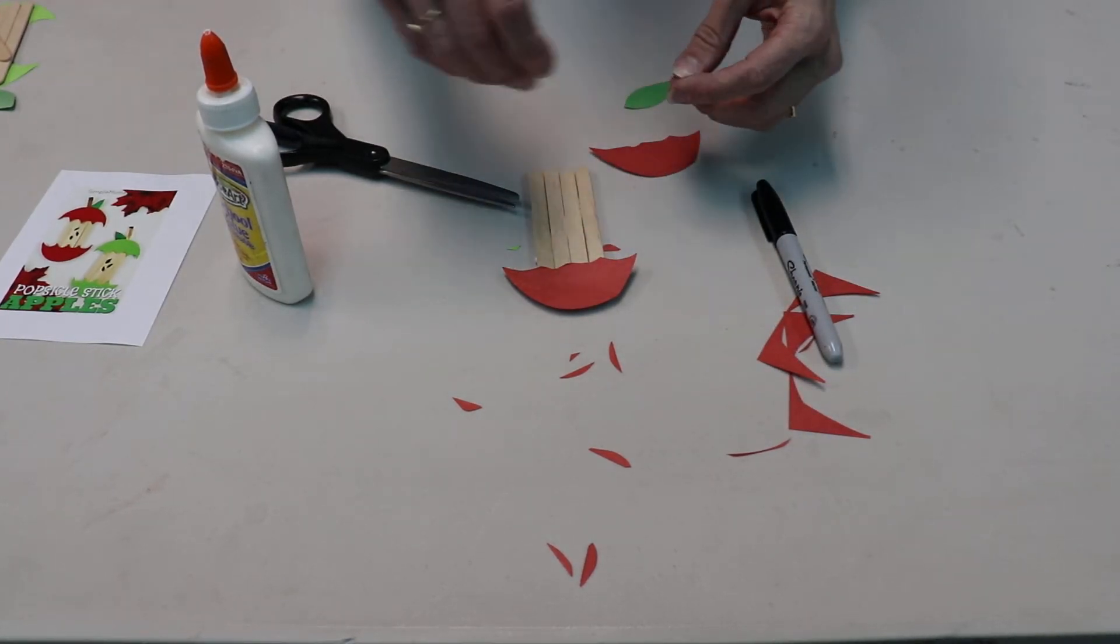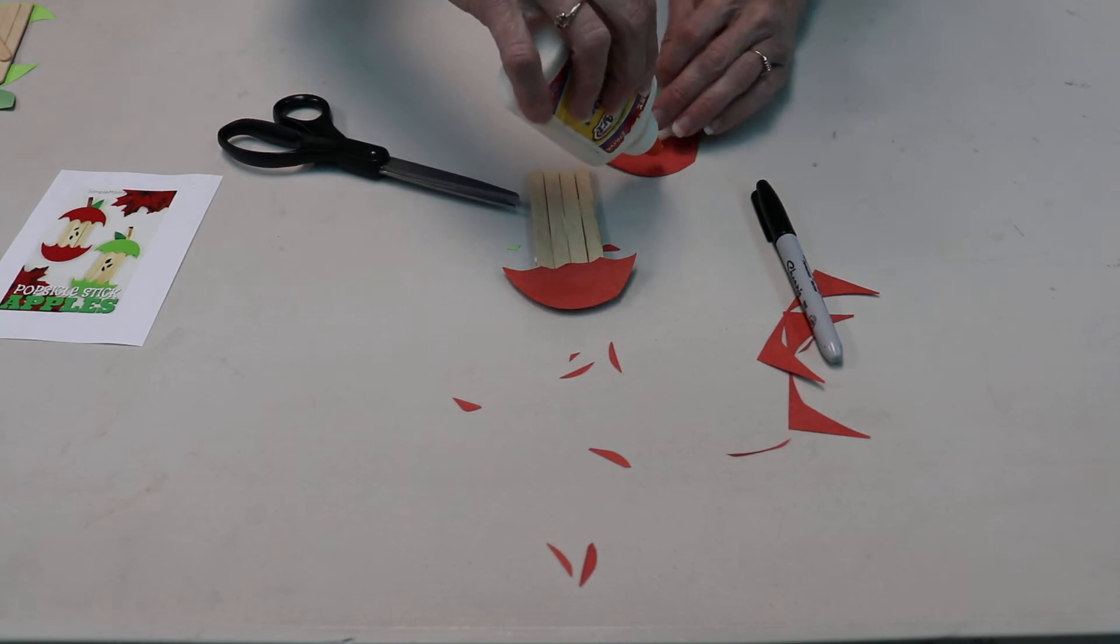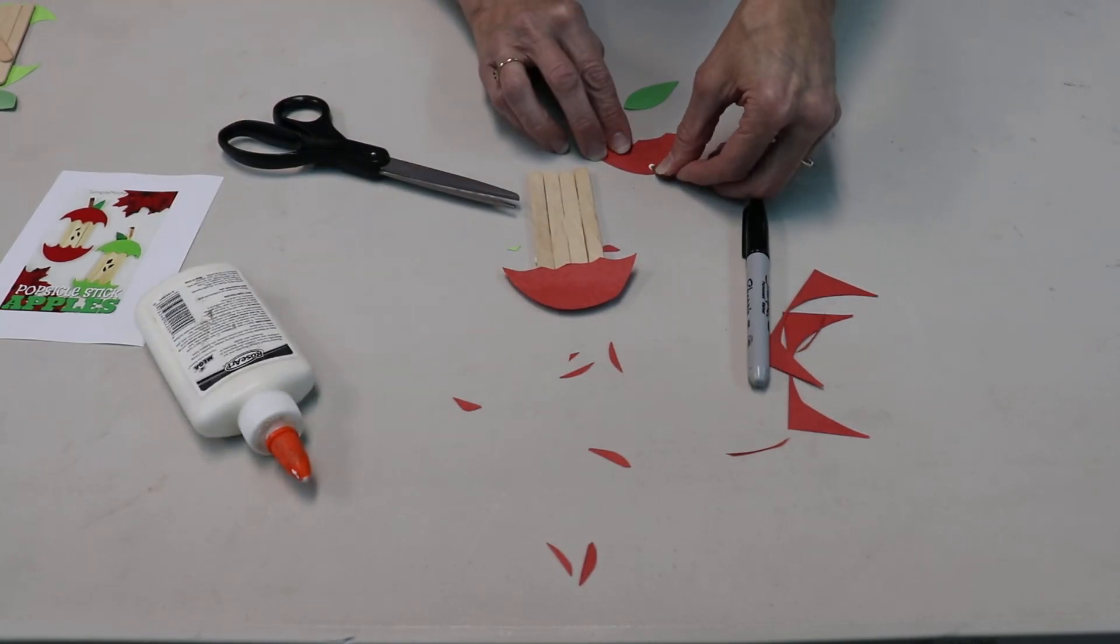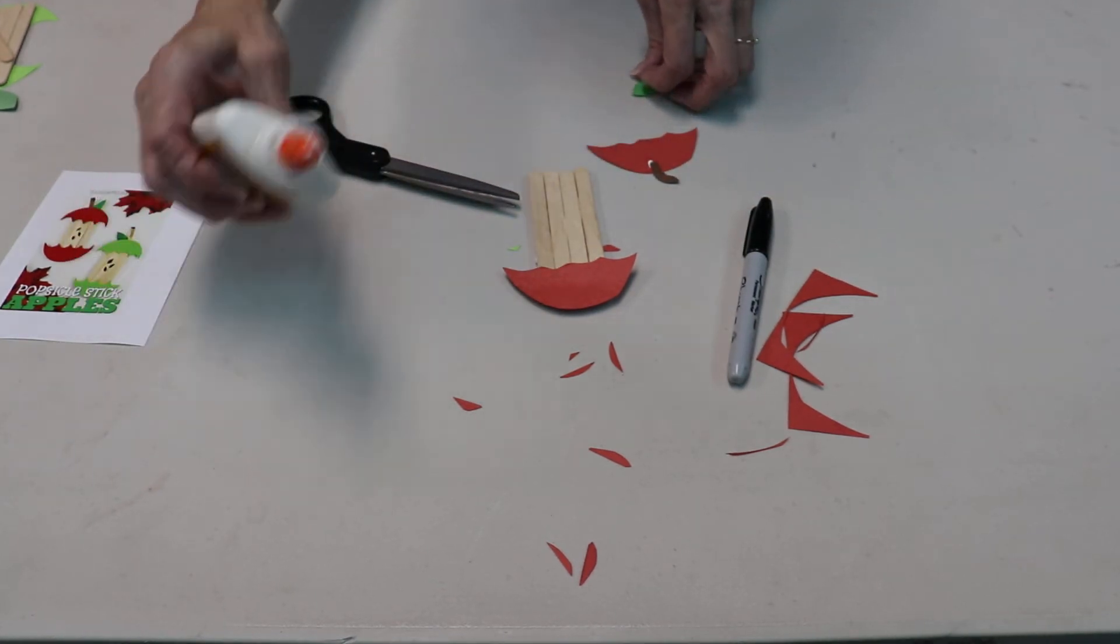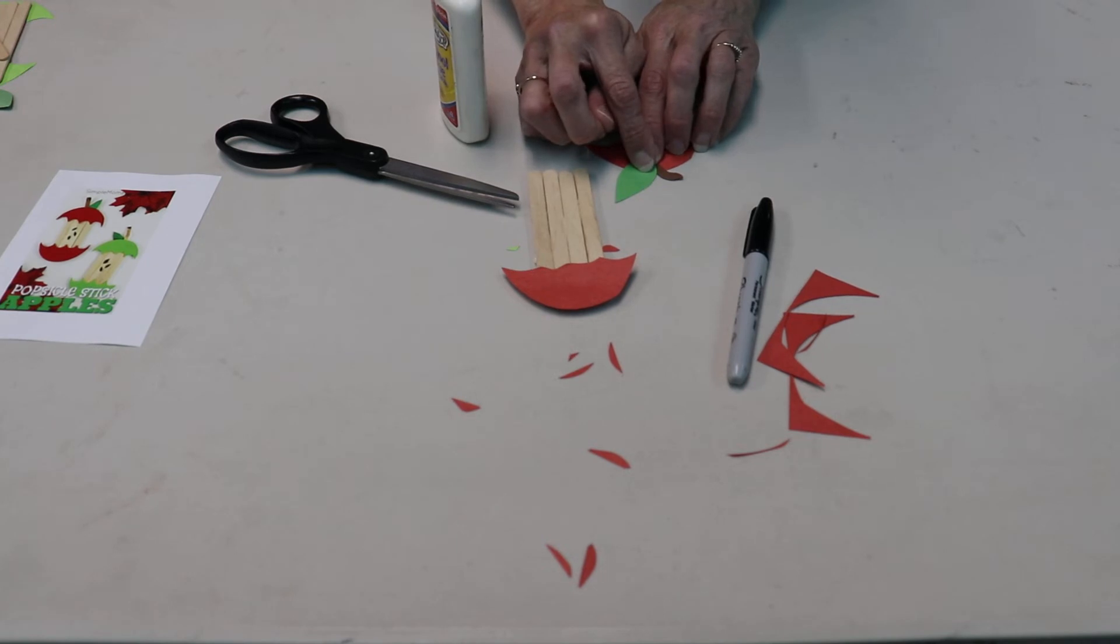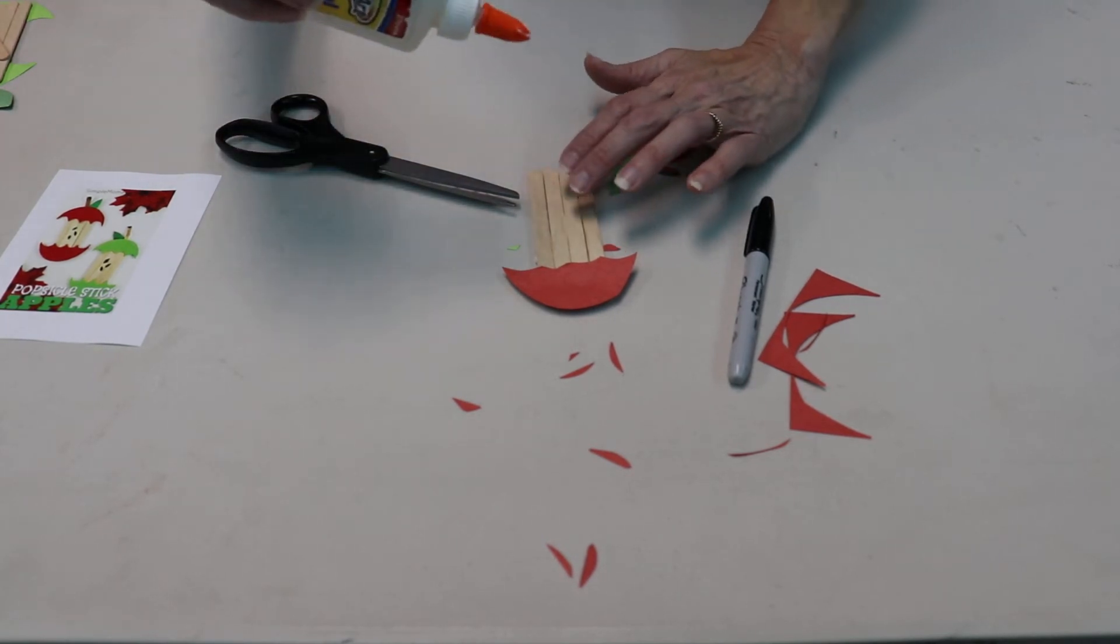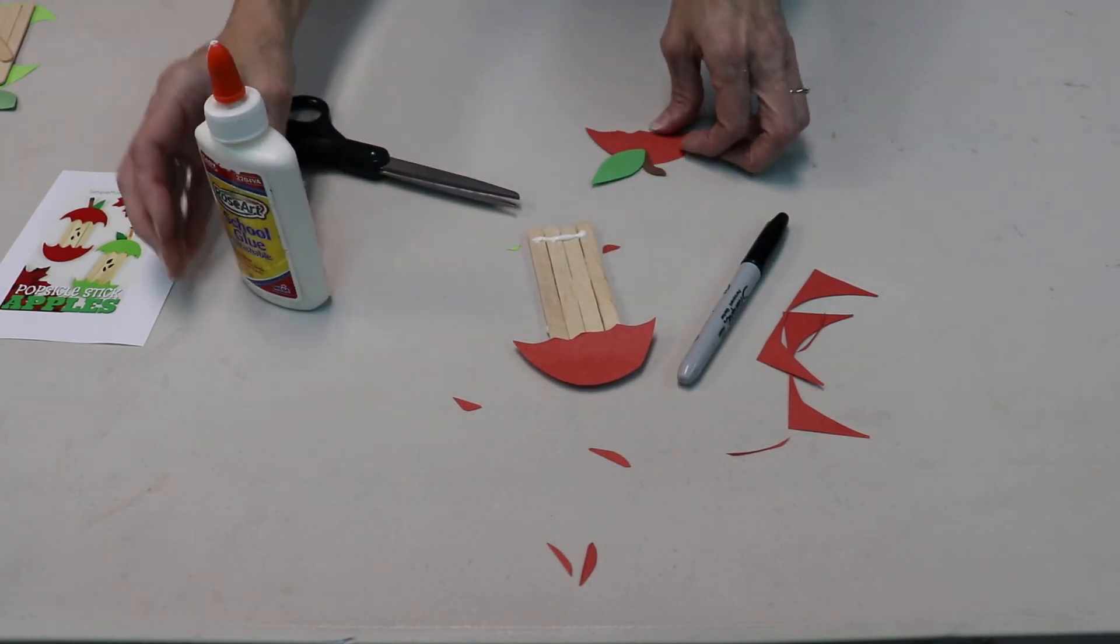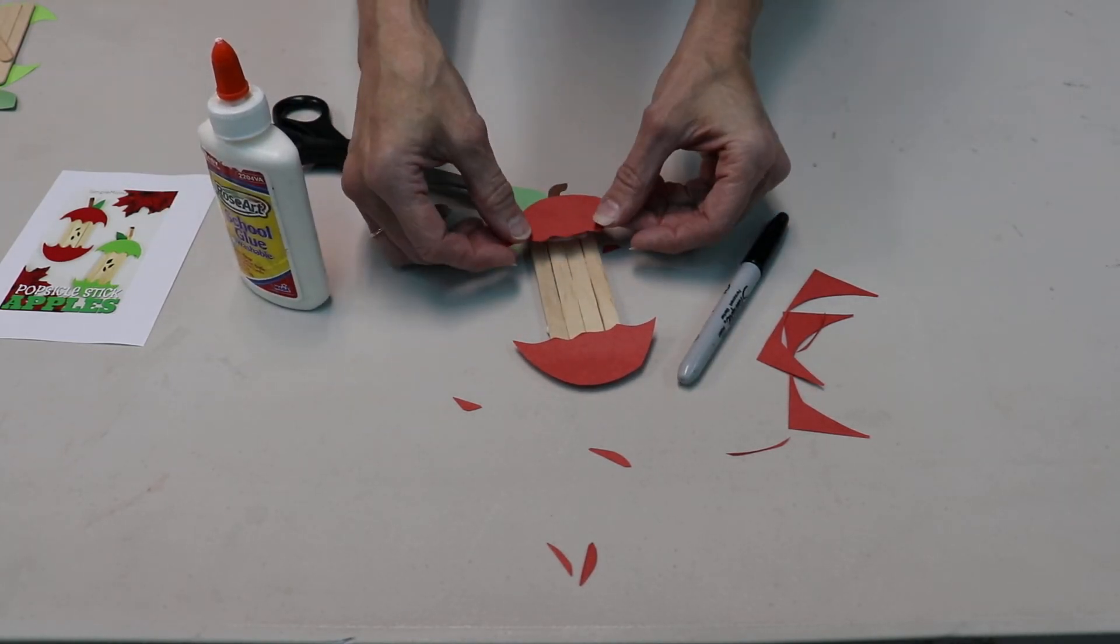Then you can glue those on the back of one of these, like this, and this. And then you can do the same thing with the top of your apple. Put more glue across the top and glue that right on there.